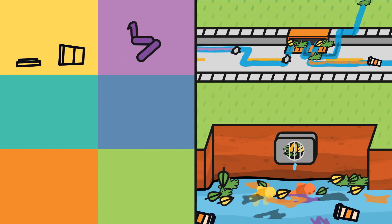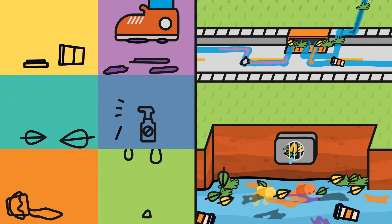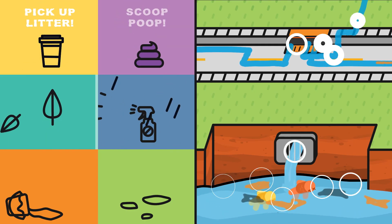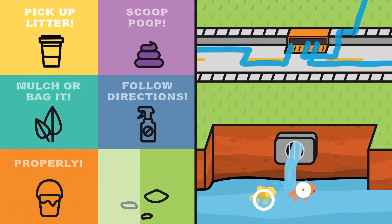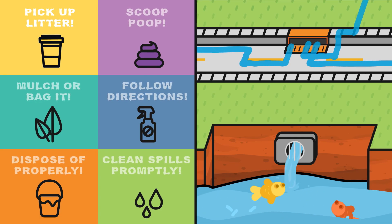So, to sum it all up, polluted stormwater can make our waters toxic and unsafe. But if each of us makes some small changes, we can prevent stormwater pollution and make sure our waters are clean and our environment is healthy for all of us.